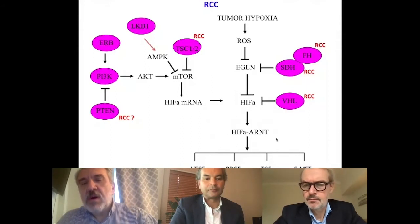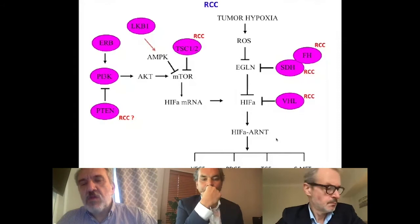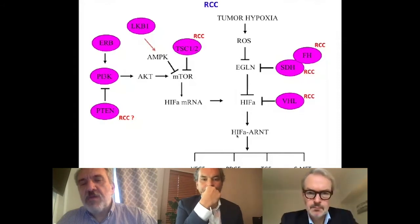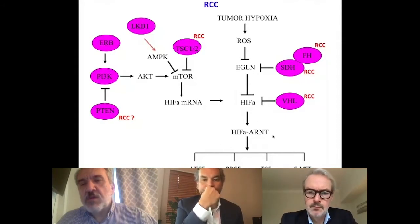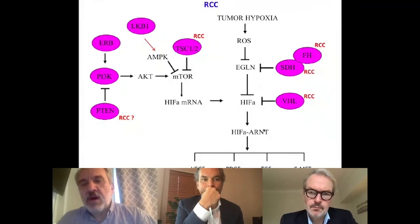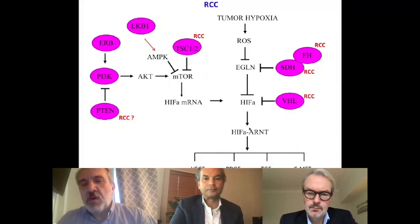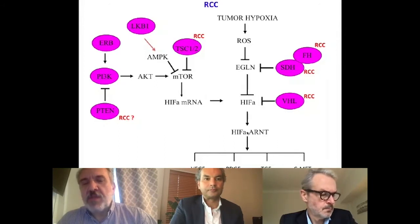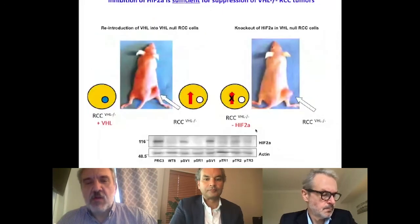An important detail in this presentation is to note that HIF-2α, the regulatory subunit, has to interact with a heterodimer, the ARNT subunit. This interaction is required for its transcriptional activity, and a small molecule inhibitor — which is actually in clinical trials, we'll talk about this in a second — disrupts this interaction and inhibits HIF-2α activity.